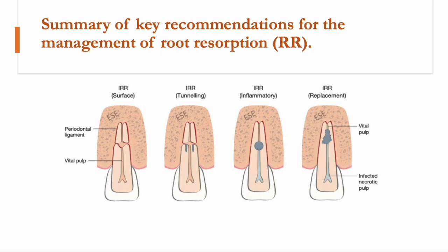Most internal resorptions are progressive and can be divided into inflammatory or replacement types. The inflammatory type consists of granulation tissue only and usually presents with an oval or circular shaped radiolucency, or what we call ballooning of the root canal outline, whereas the replacement type consists of a combination of granulation tissue and metaplastic bone-like hard tissue, presenting radiographically as an irregularly shaped radiolucency with a mottled or cloudy appearance and a partially unclear outline.